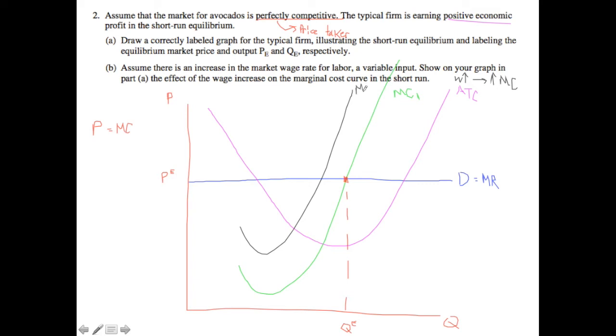So in this case, we have marginal cost 2. And we see that marginal cost equals price at a lower point. And that would be our new output. And so that clearly shows that there has been a change in relation to this wage increase.